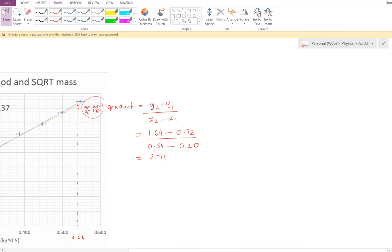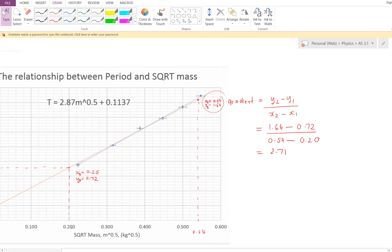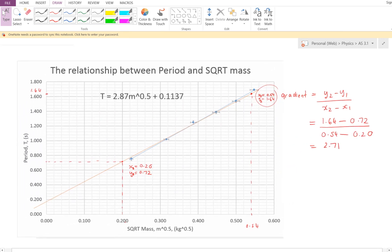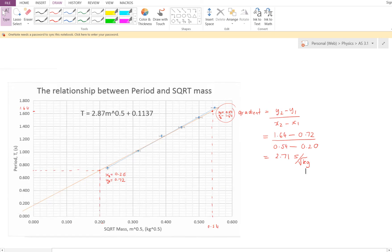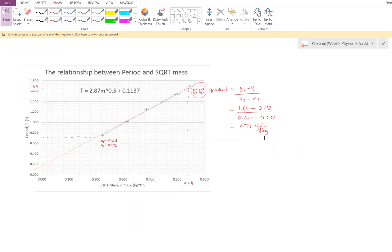Now we want to be good with our units, so thinking about it, it's rise over run, the rise units are seconds, and the run units are square root kilograms. So we have 2.71 seconds per square root kilogram.